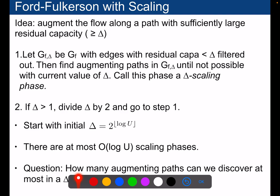So at iteration i, you've got the value delta, at iteration i plus 1, you will use delta divided by 2. How many augmenting paths can you have in each step? That's the question that we need to answer.